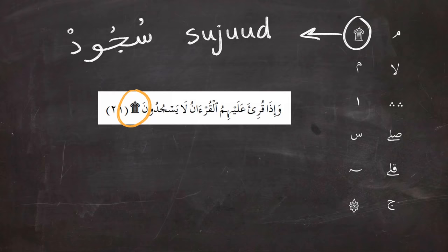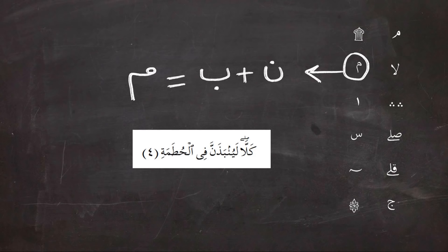Next, the sign that looks like Meem looks a little bit different than the other Meem, so make sure you can distinguish between them because they mean two different things. This Meem appears in the middle of the word, so when Noon and Ba follow one another in the same word, you don't pronounce Noon but you pronounce Meem.